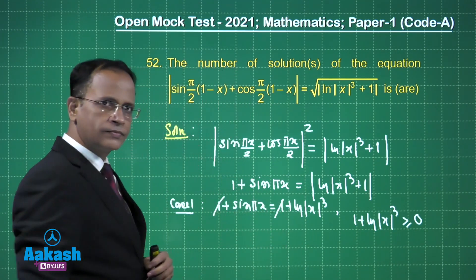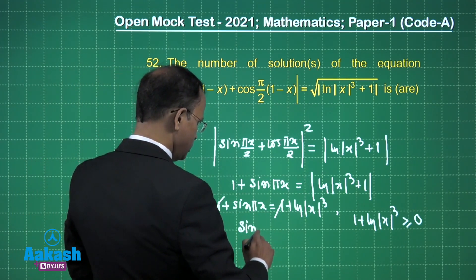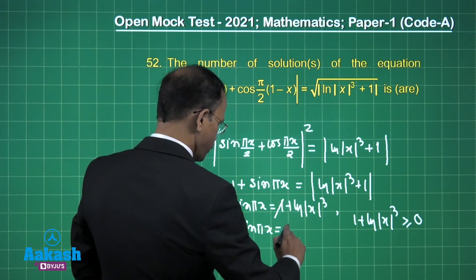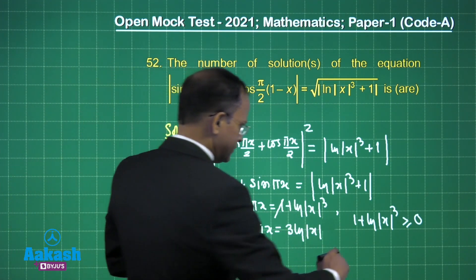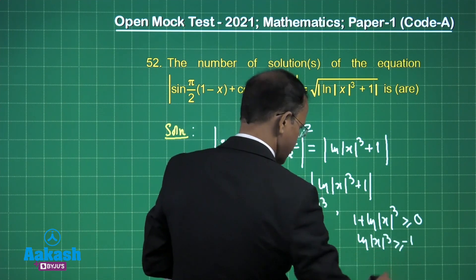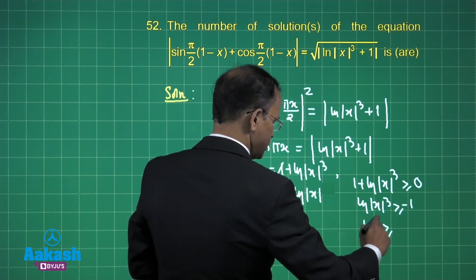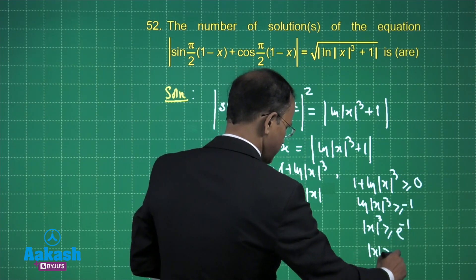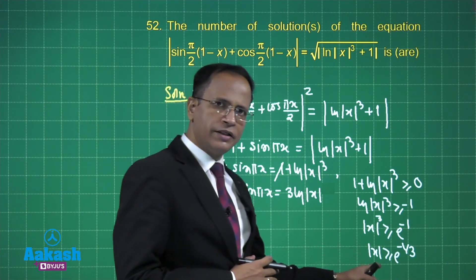The 1s cancel, so sin(πx) equals 3·ln|x|. The condition 1 + ln(x³) ≥ 0 means ln(x³) ≥ −1, which gives |x| ≥ e^(−1/3). So Case 1 has the domain |x| ≥ e^(−1/3).